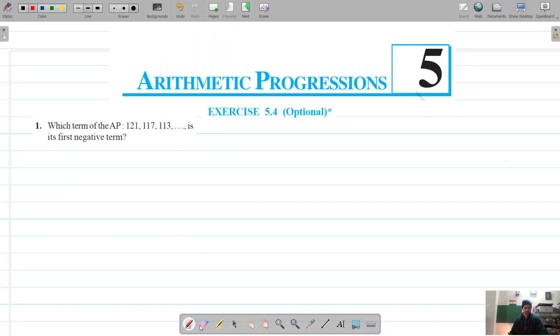Okay, so the next question is question number one of exercise 5.4, and we have to find the first negative term of this AP. The terms of this AP go on decreasing: 121, 117, 113, and so on. At a particular moment there will be a negative term.